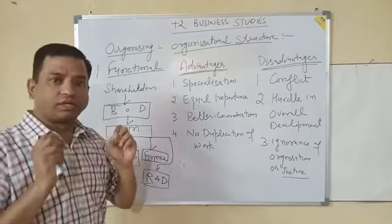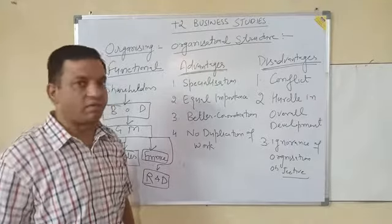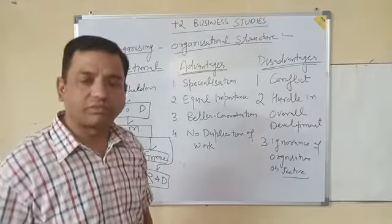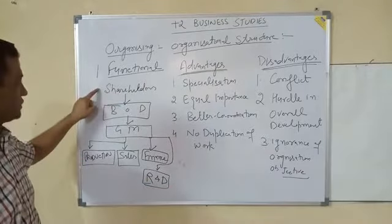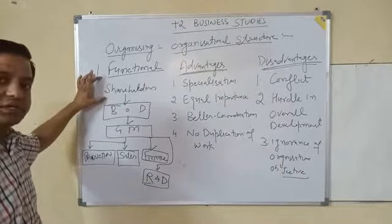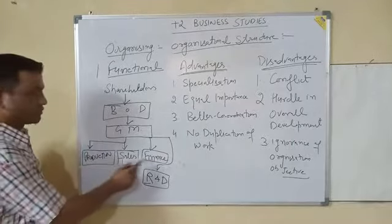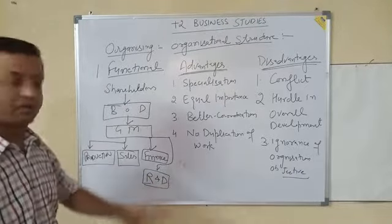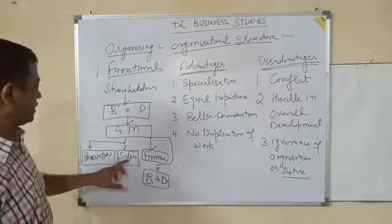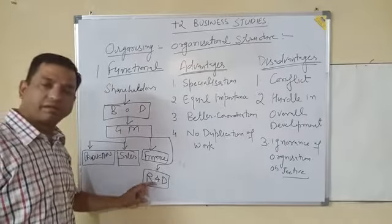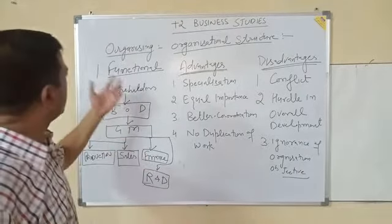Functional organizational structure is that type of structure in which the manager divides work into different functions. Different types of functions may be performed by a company, and on the basis of each function, every department is made. At the top there will be shareholders, then the board of directors, then the general manager, and then different activities are grouped into departments such as production, sales, finance, and research and development.